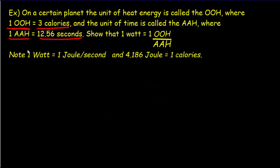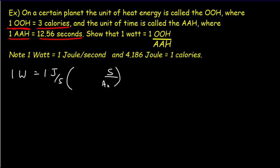We begin with one watt, which is one joule per second. We want to get rid of earthly units and move to alien units. Let's do the time unit first — we get rid of seconds and switch to ah's. One ah equals 12.56 seconds, so now we've got joules per ah.